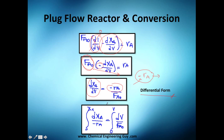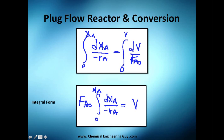Many people prefer the integral form, which is the already-integrated version. On the left side we have the integral of dxA over the rate of reaction, integrated from zero to xA. On the right side, the differential of volume is divided by FA0, which is a constant that can be pulled out.